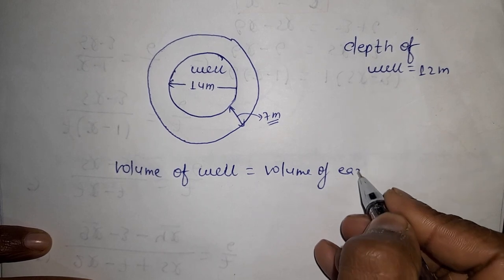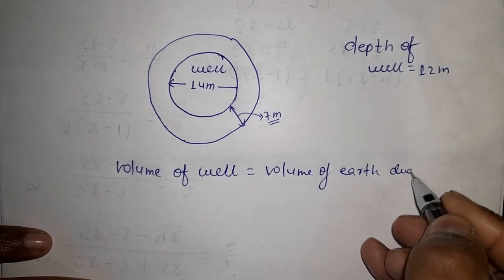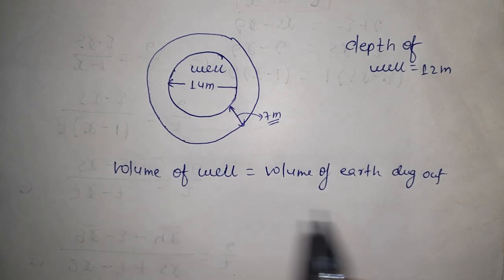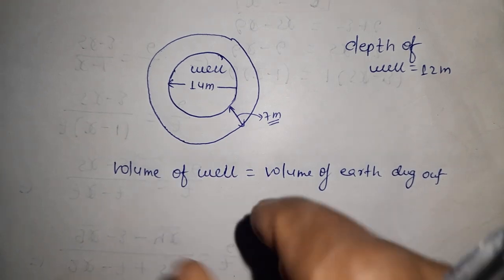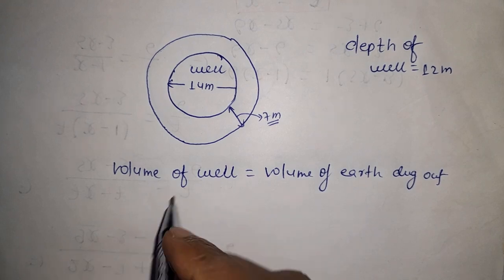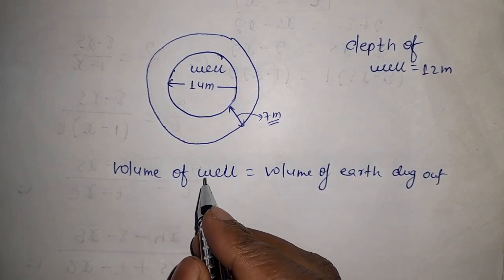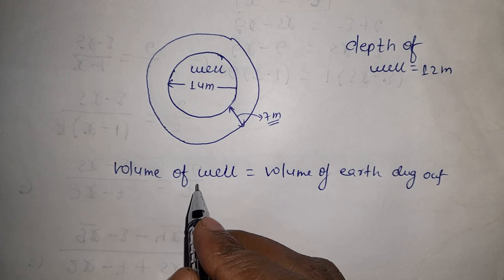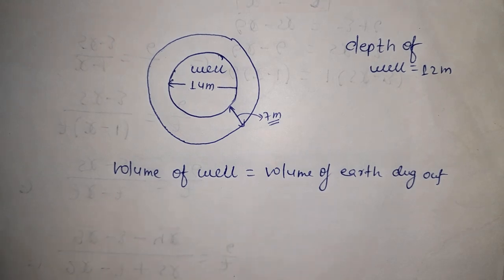Volume of earth dug out - the well's volume will be the same as the earth's volume that was removed from that well. For the earth's volume, we'll use the well's volume formula - cylindrical shape.